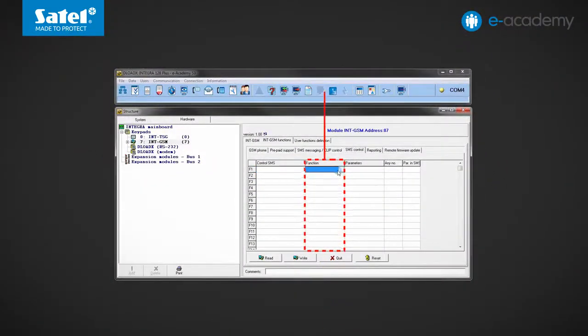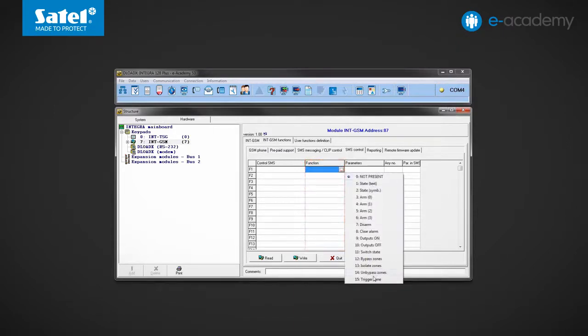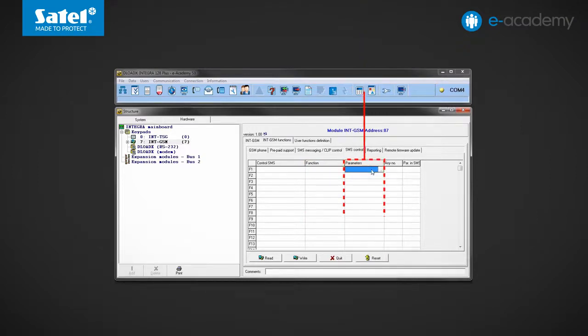The second column is used to select functions that will be triggered by the control commands. There are 15 options available, which I will discuss in a moment. In the third column, you can specify parameters related to the function called, such as numbers or partitions or outputs.